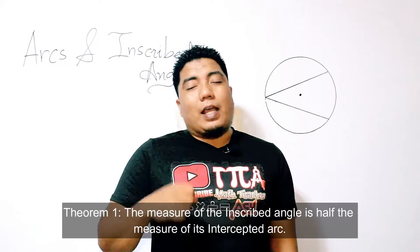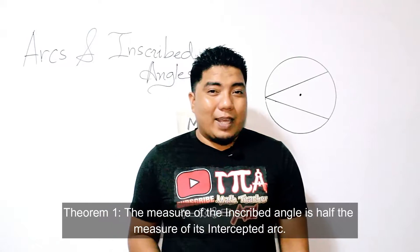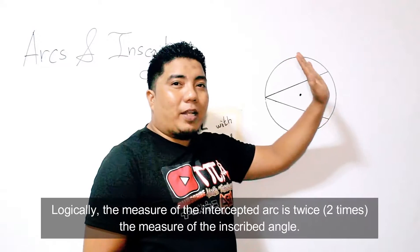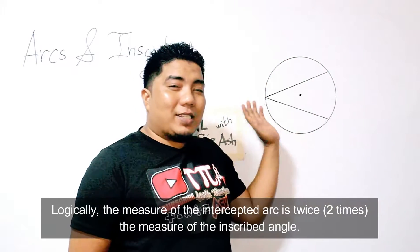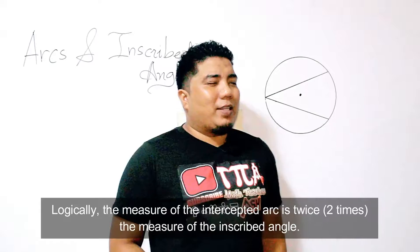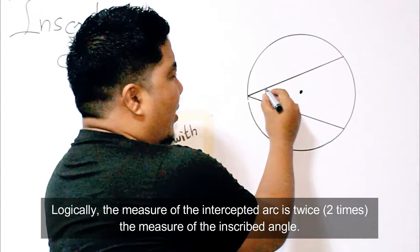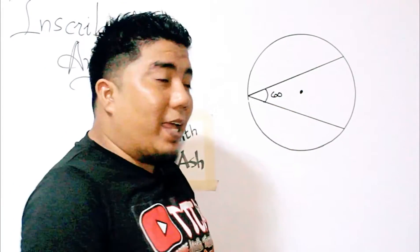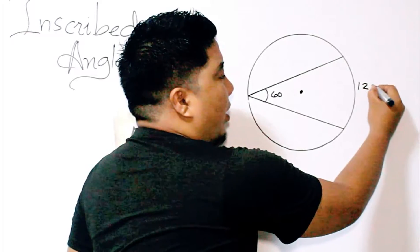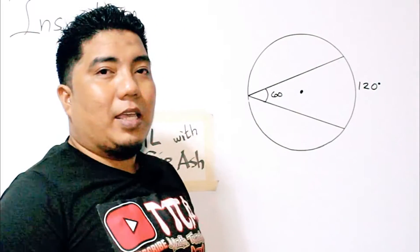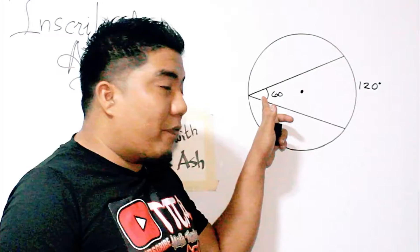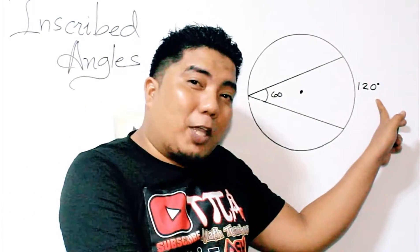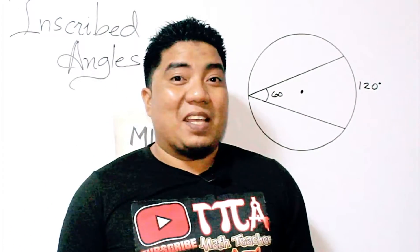Theorem number one states that the measurement of an inscribed angle is exactly one-half of its intercepted arc, and the intercepted arc is twice the measurement of its inscribed angle. For example, if an inscribed angle measures 60 degrees, then the intercepted arc is 120 degrees — meaning the inscribed angle is half the measure of its intercepted arc, and the intercepted arc is twice the measure of its inscribed angle.